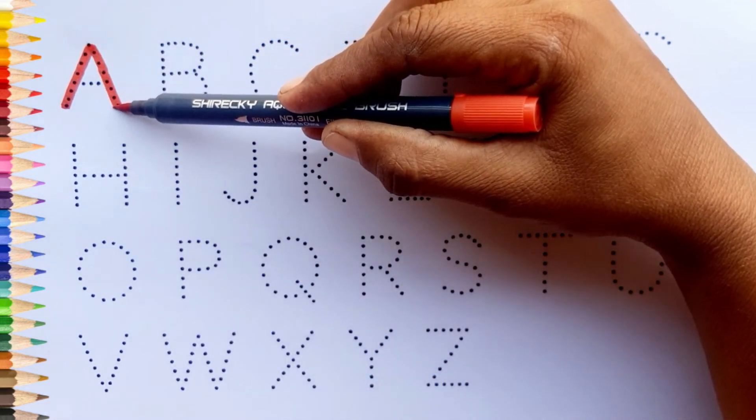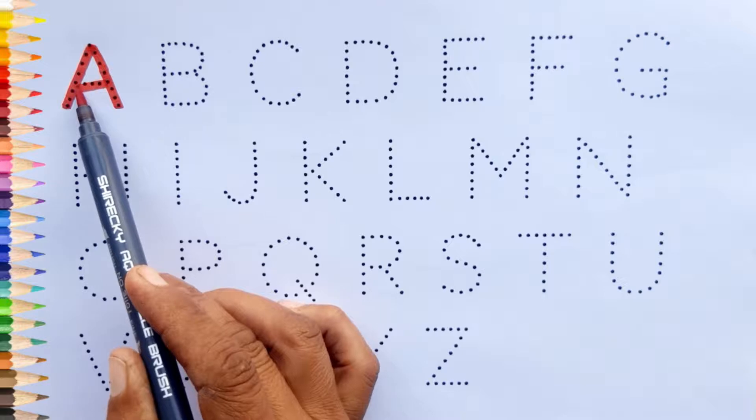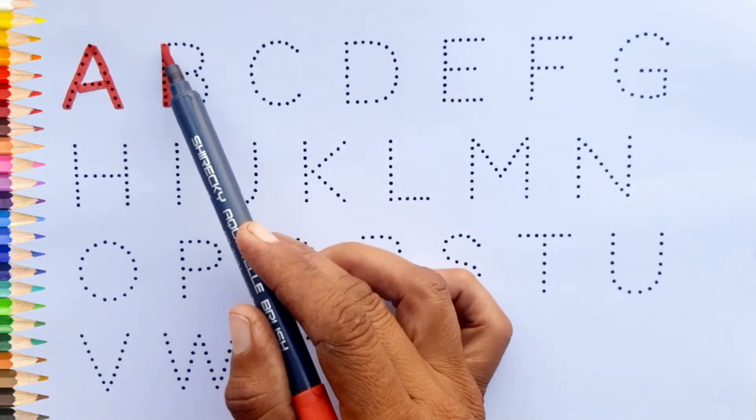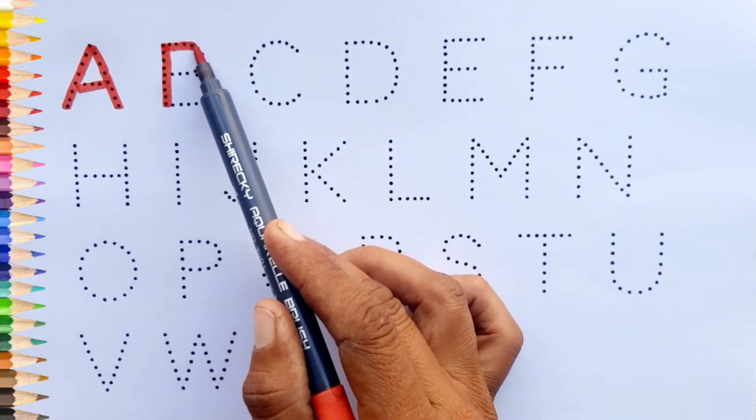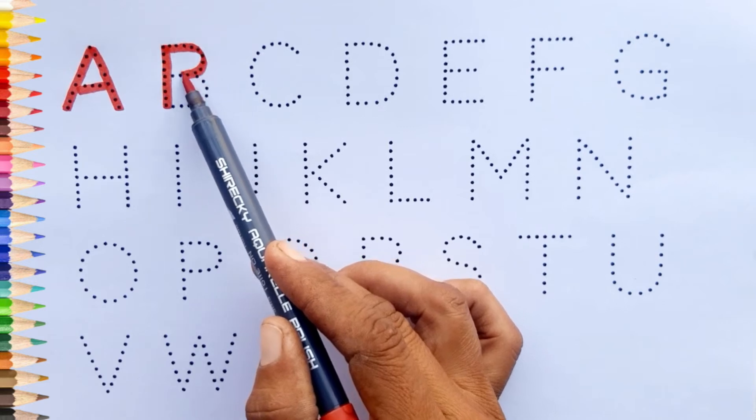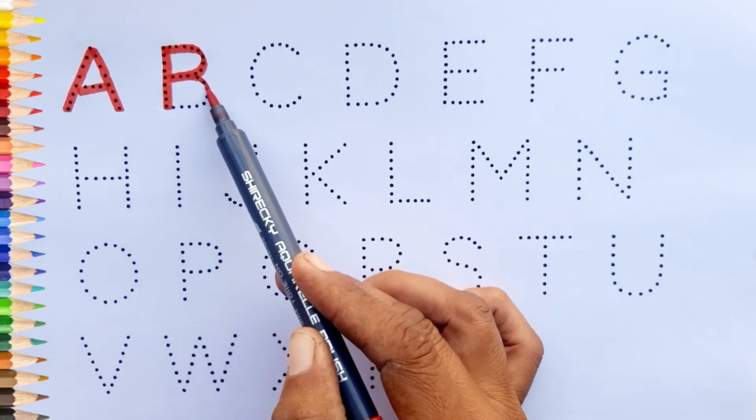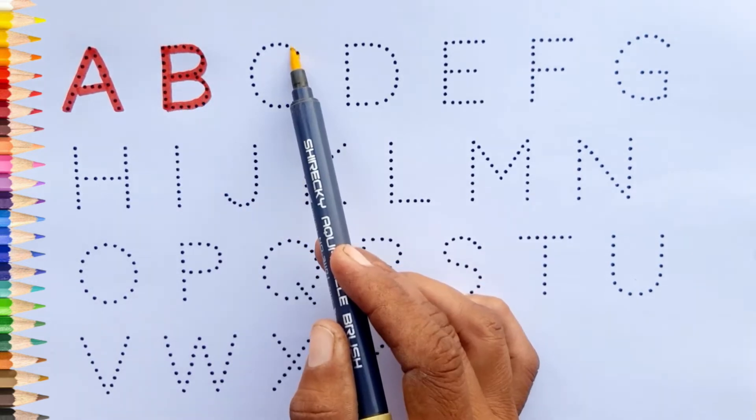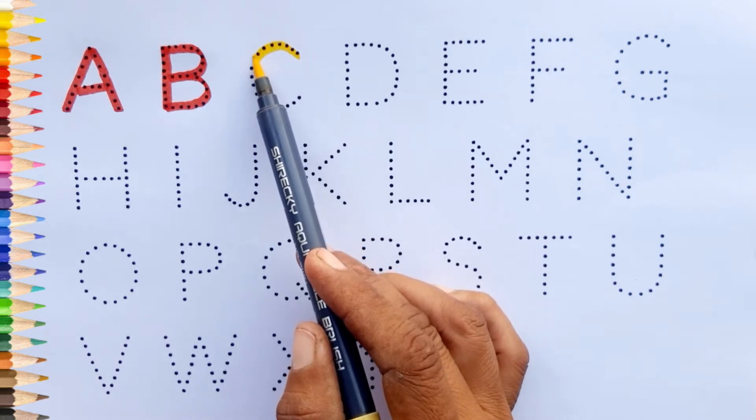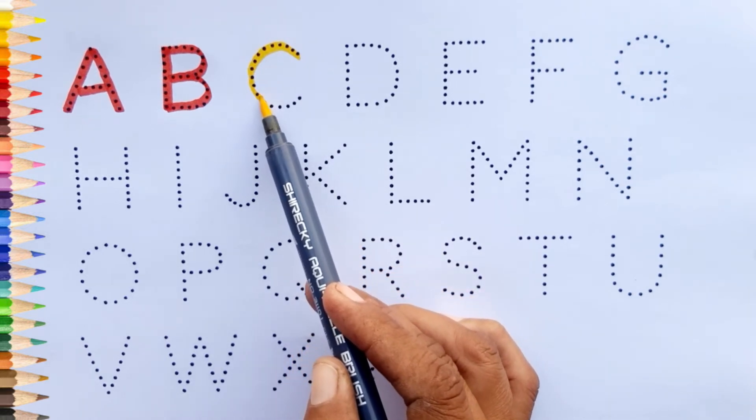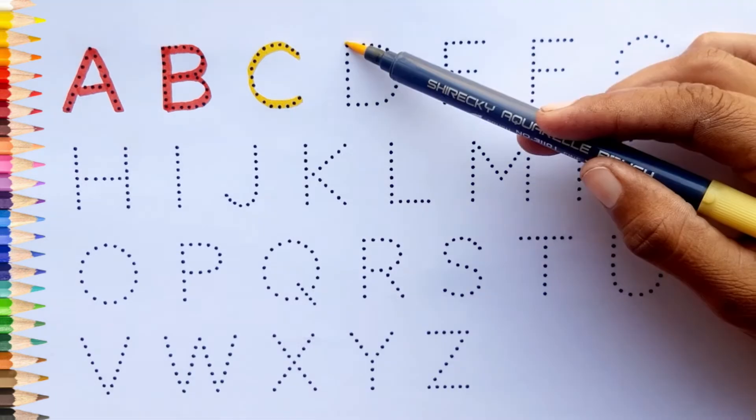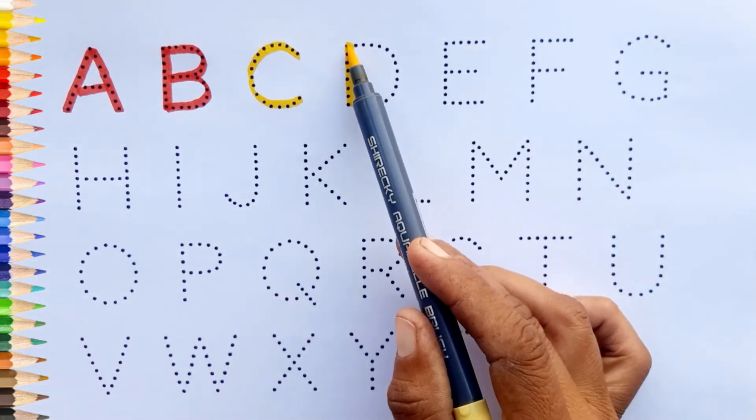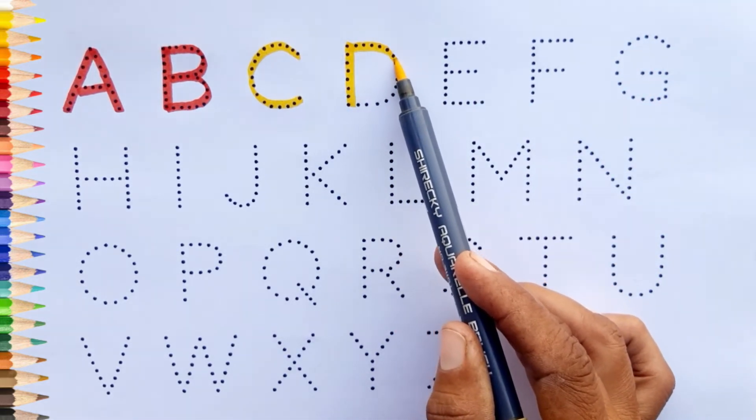A. A for aeroplane. B. B for bat. Yellow color. C. C for cup. D. D for dog.